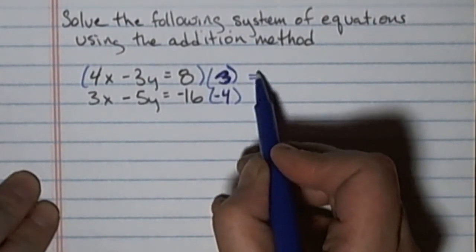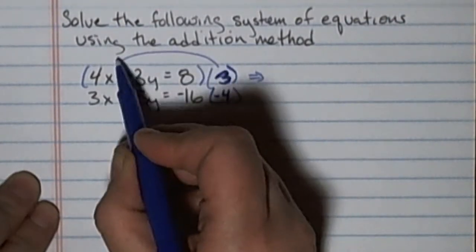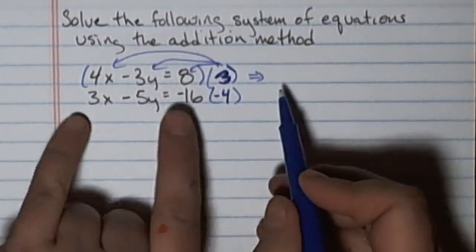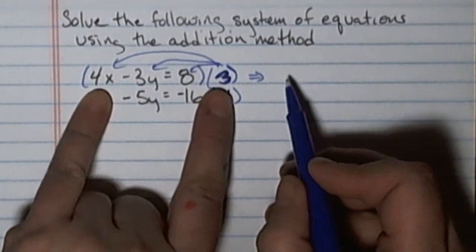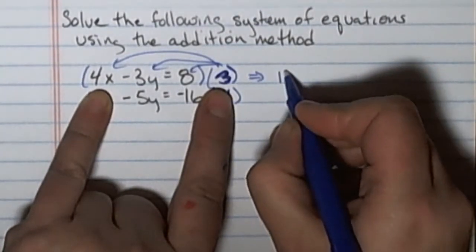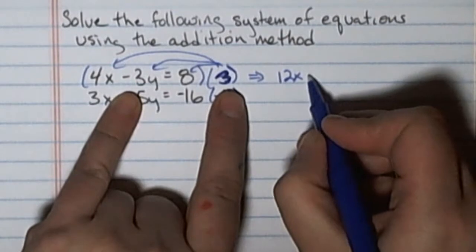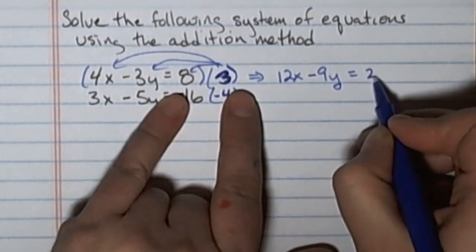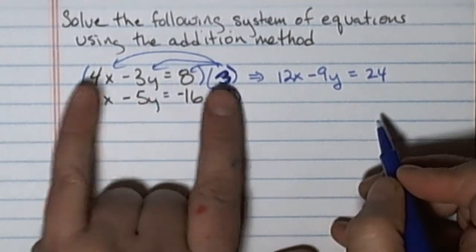Now when I do that, remember I need to multiply the 3 by each term on each side of the equation. So everything gets multiplied by 3. 3 times 4x is 12x, and then I have minus 9y equals 24. So everything got multiplied by 3.